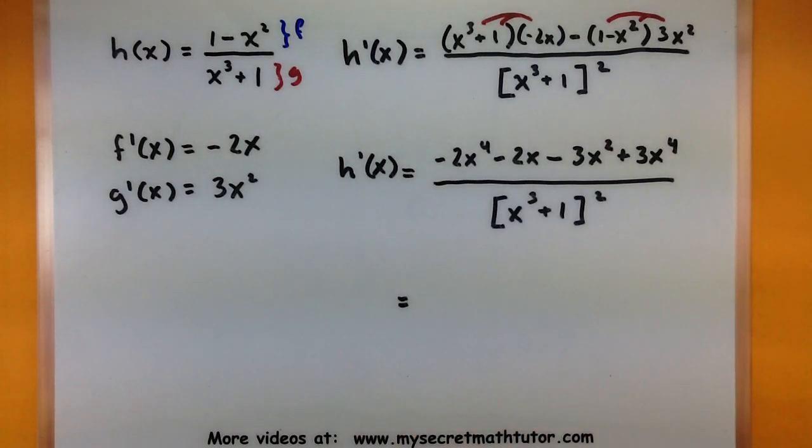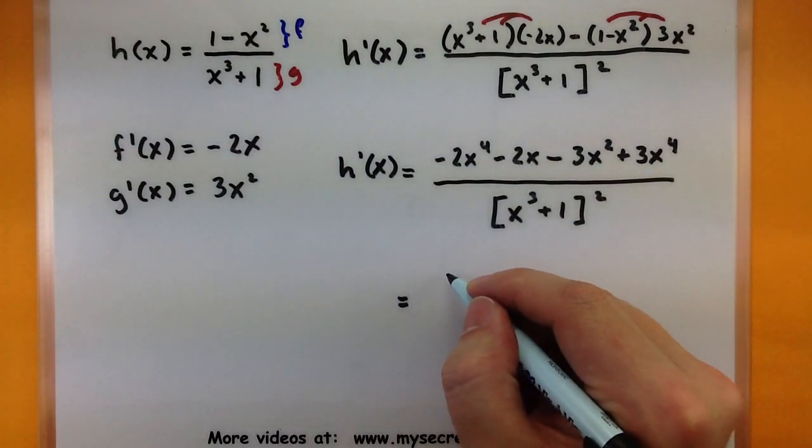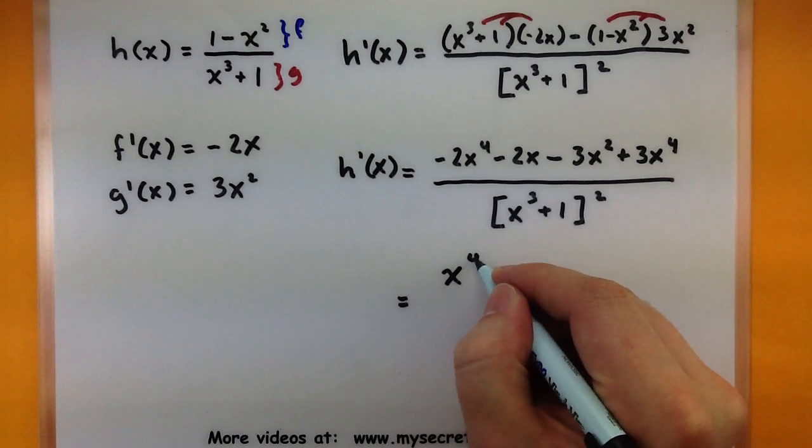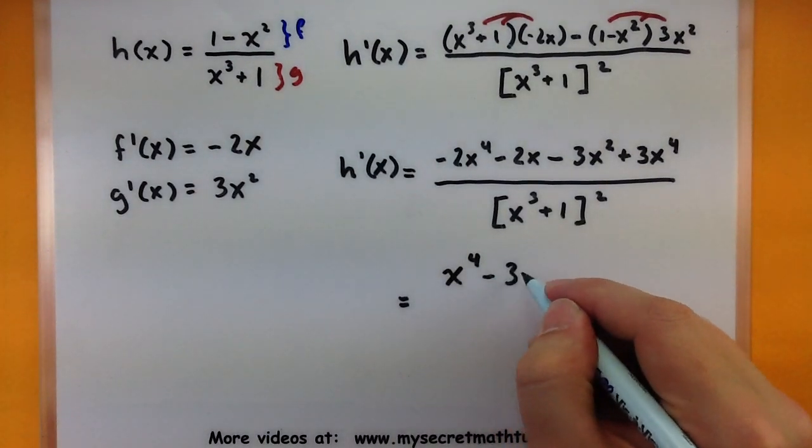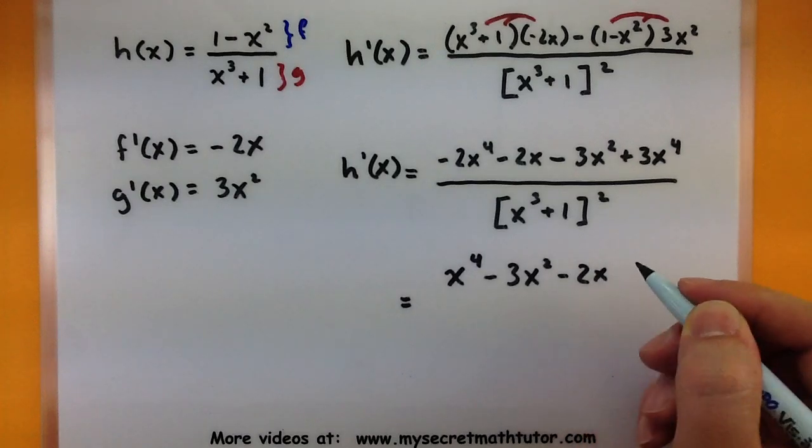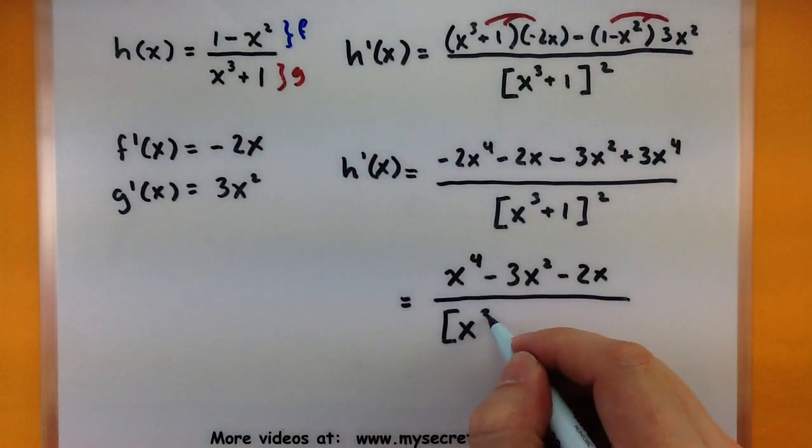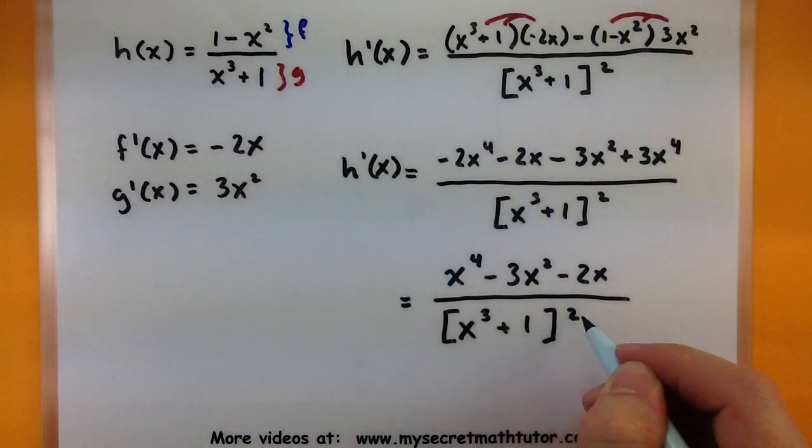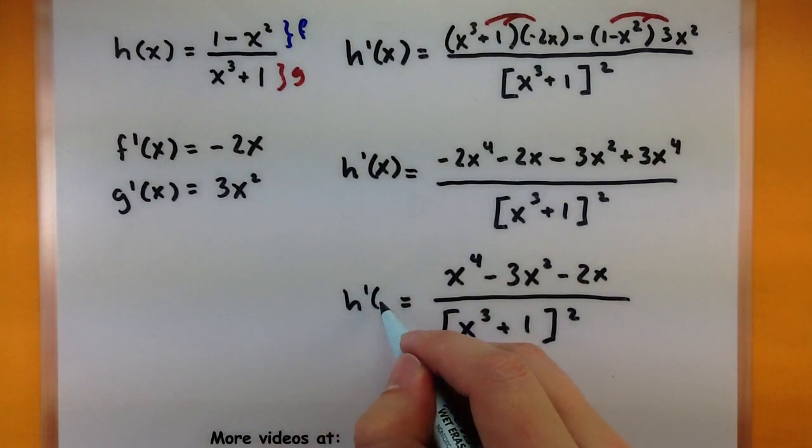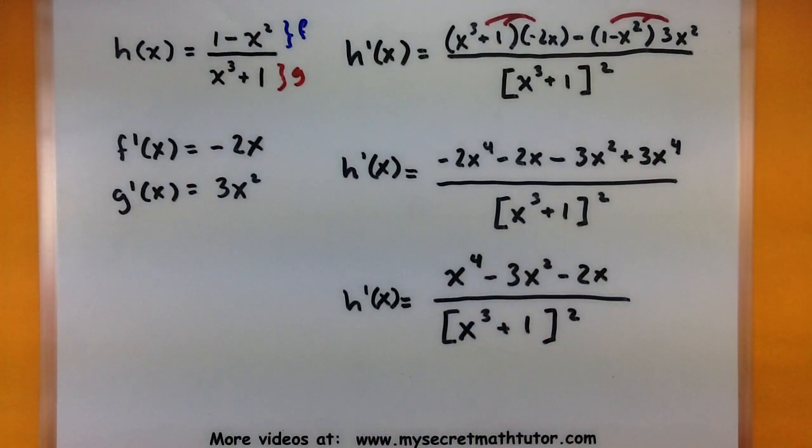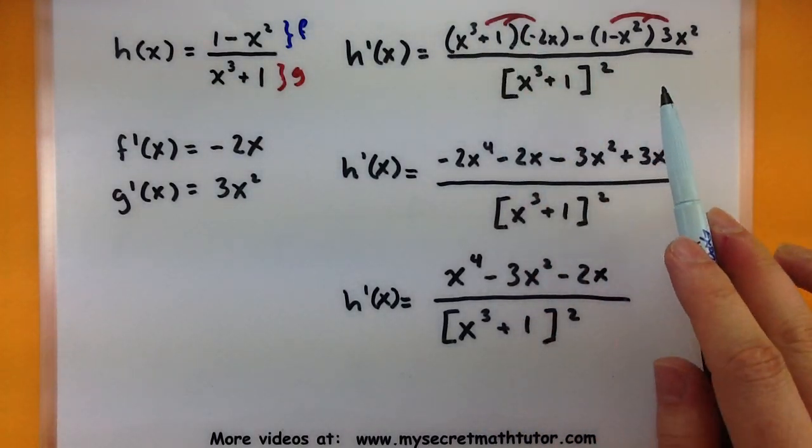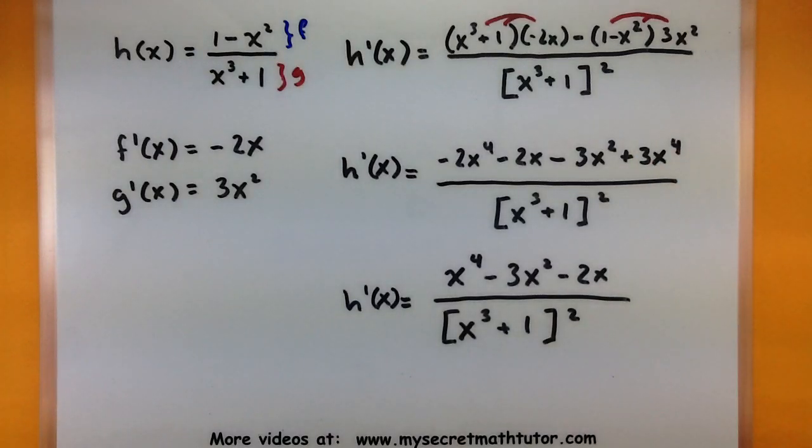So, I do have a few terms that I could go ahead and combine. We'll go ahead and do so. So, combine our x to the fourths minus 3x squared minus 2x all over x cubed plus 1 the whole thing squared. Alright. So, this one you could probably play around with it even more and maybe factor something out and cancel a little bit more of the bottom. But, again, I want to just leave this as it is because the important part is that all of our derivative and the functions by themselves ended up in the right spot.